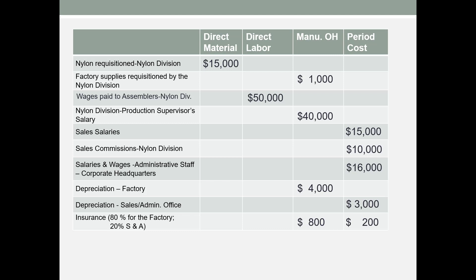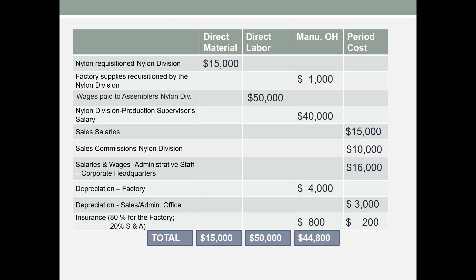They could determine this split based on square feet or value — somehow they've decided how to break this cost up. Our totals: direct materials are $15,000; direct labor is $50,000; manufacturing overhead is $44,800; and total period costs are $44,200.